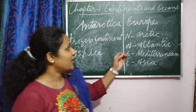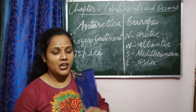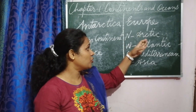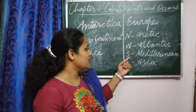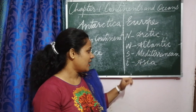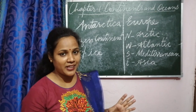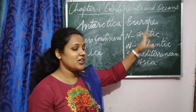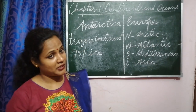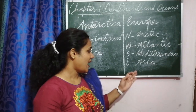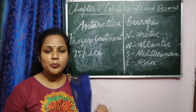Next we have Europe. Europe is the sixth largest continent. In the north of Europe you have the Arctic Ocean, in the west the Atlantic Ocean, and in the south the Mediterranean Sea. In the east, Europe is connected with Asia. These are the water bodies surrounding Europe.